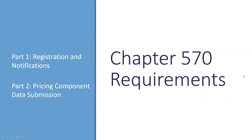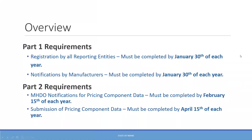We're going to quickly give a reminder of the requirements associated with Chapter 570. Part 1 requirements include registration by all reporting entities, which must be completed by January 30th of each year. Notifications by manufacturers must also be completed by January 30th of each year. Part 2 requirements include MHDO notifications for pricing component data, produced by February 15th of each year, and submission of those pricing component data must be completed by April 15th of each year.